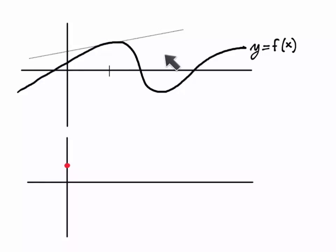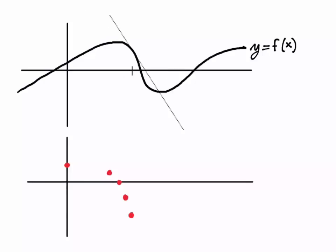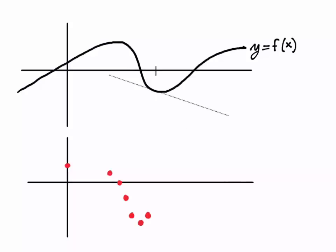Moving to the right, we have a tangent line with a smaller slope — say the slope is one half. So directly below that x value on the other plot, we'll plot a red point whose y coordinate is one half. Moving a little further right, the tangent line is horizontal, and horizontal lines have a slope of 0, so below that point we plot a point with y coordinate 0. Continuing: here we have a slope of about negative 1, then negative 2, then maybe negative 2 and a half, then it gets less steep, back to negative 2, then negative 1. Then we have another horizontal tangent line.